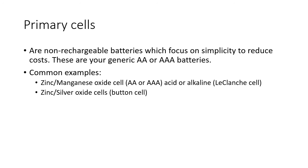When doing your research on primary cells, think about why you can't recharge them — consider what happens to the products so they can't be turned back into reactants. Research why alkaline batteries last longer than acid batteries, why button cells last so long, and what the voltages are for both battery types. You should also be able to find the half-equations. Exam questions will typically show you a primary cell and ask for half-equations or voltage — things covered in previous videos.